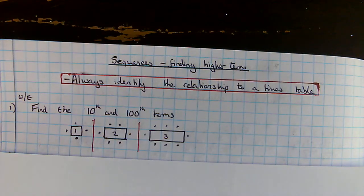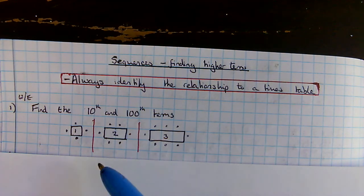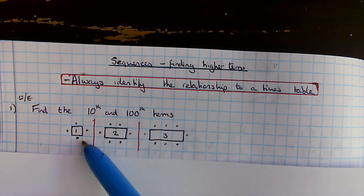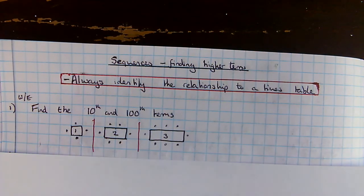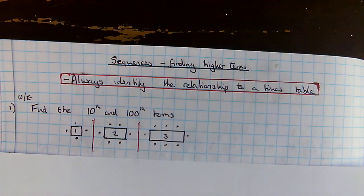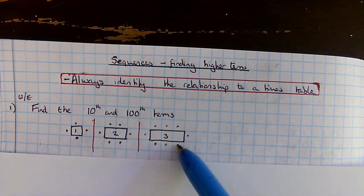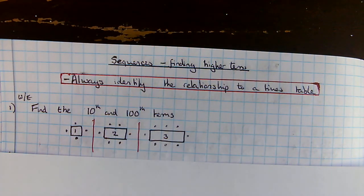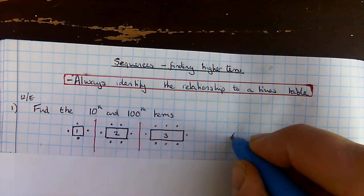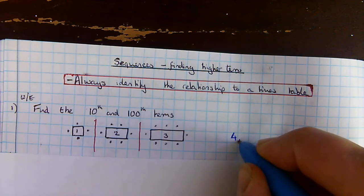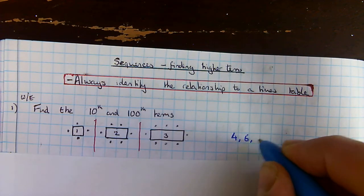For example, you've got people sitting around tables. If there's only one table, you've got four people sitting around it. If there's two tables, you've got six people sitting around it. And if there's three tables, you can have eight people sitting around it. So we can start just writing out the numbers like that. Here I've got four, six, and eight.